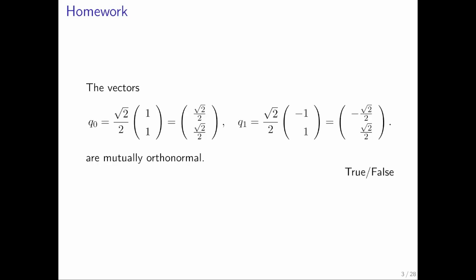It turns out these are mutually orthonormal. I'm just going to do a small part of it, but if you check q0 transpose q0, for example, what you get is the square root of 2 over 2 times the vector (1, 1) transpose times the square root of 2 over 2 times the vector (1, 1).